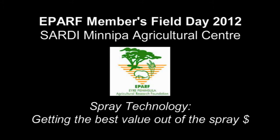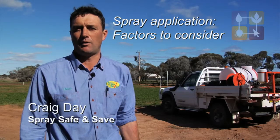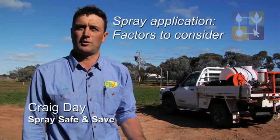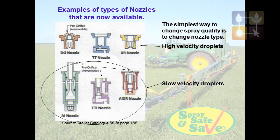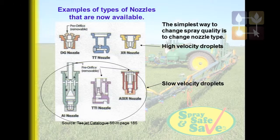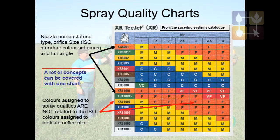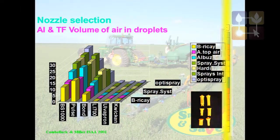A key factor to consider in the application process for any grower, no matter where they are, is the selection of the nozzle. When selecting a nozzle, it must be operated within its correct pressure range. That's going to be affected by your ground speed, your terrain, the size of your rig, and the size of your tractor. These factors all have to come into these decisions.